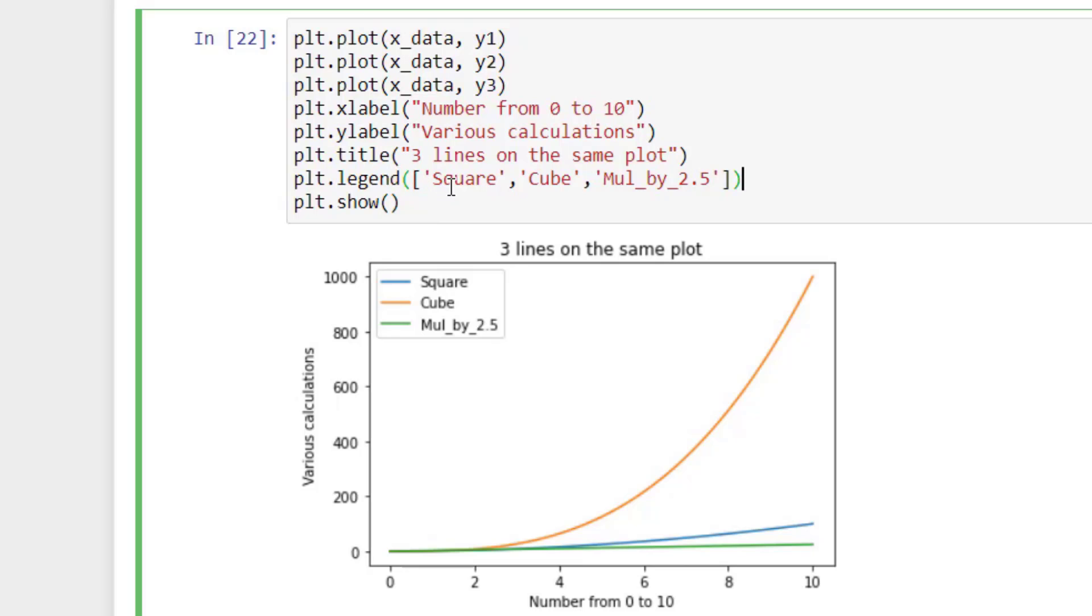So you learned how to create legend using the first method. But generally this is not preferred. Because if you change the position of this one, this square represents the first plot that is x and y1. The cube represent x and y2. The multiply by 2.5 represents x and y3. But if you change the position here, let's say you put the cube at the end.